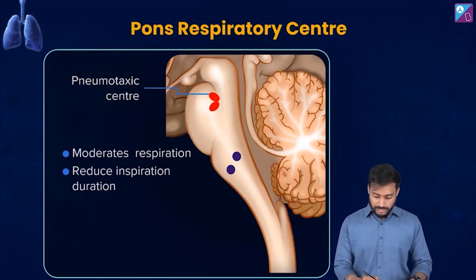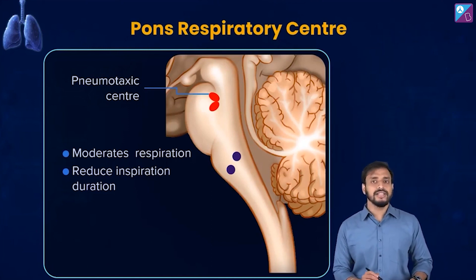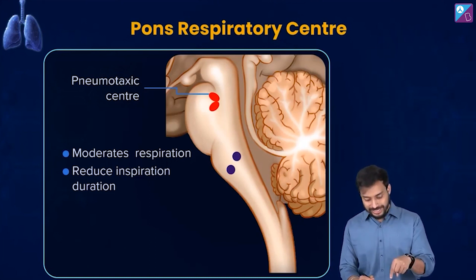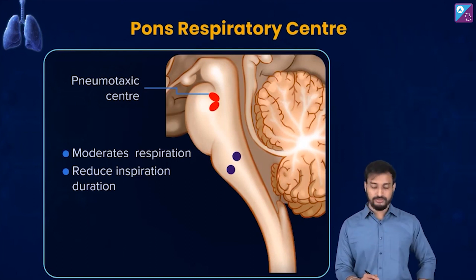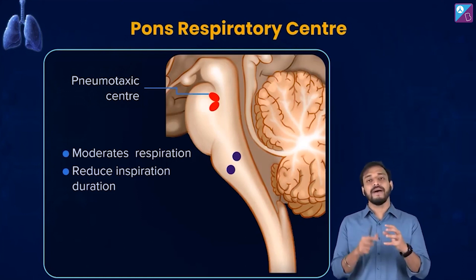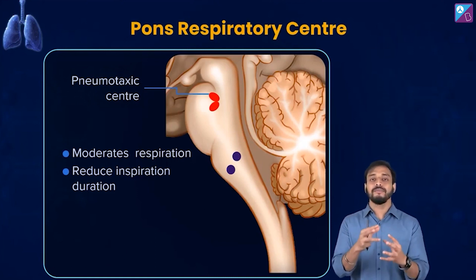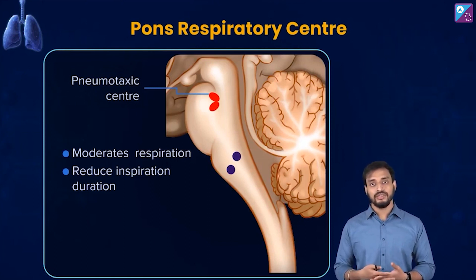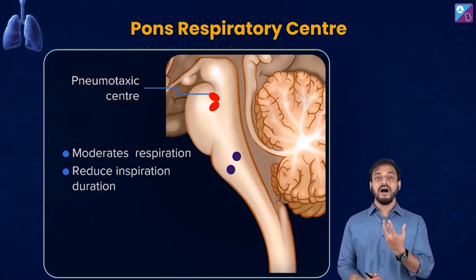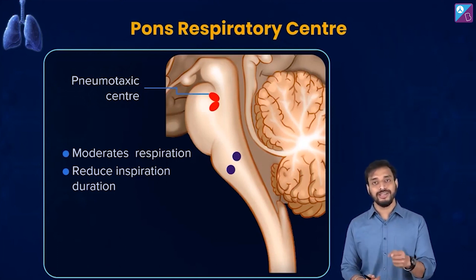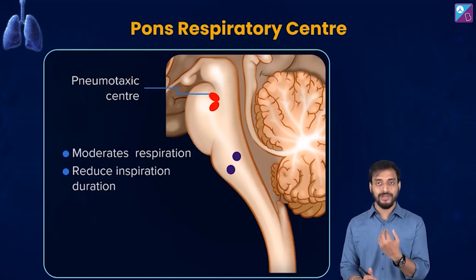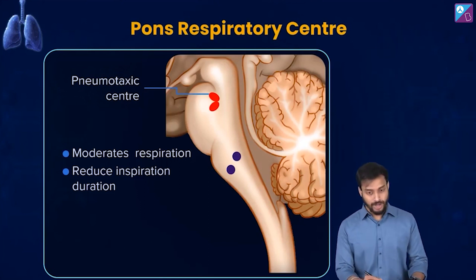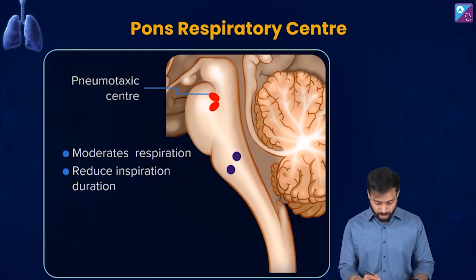We can say the pneumotaxic center decreases the tidal volume, whereas the apneustic center increases it. Together, they regulate respiration: when you yawn and take deep long breaths, the apneustic center is in control; during normal breathing, the pneumotaxic center prevents those long deep breaths. Both work together to regulate the respiration rate.